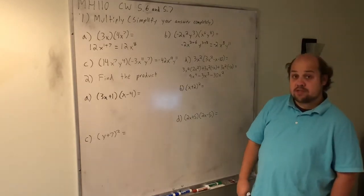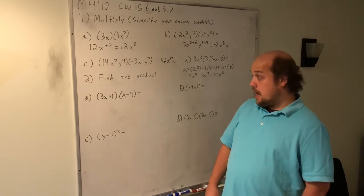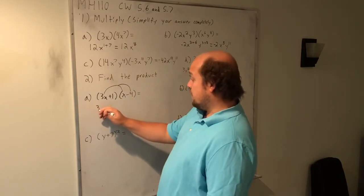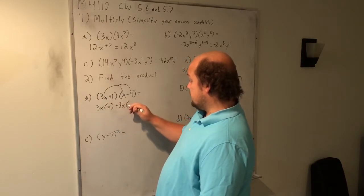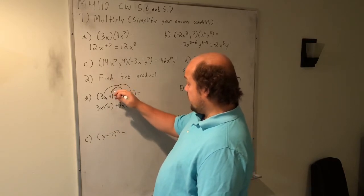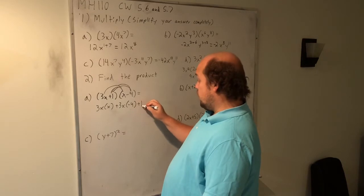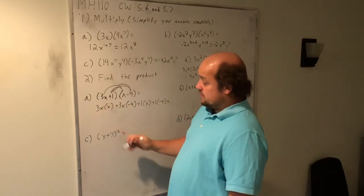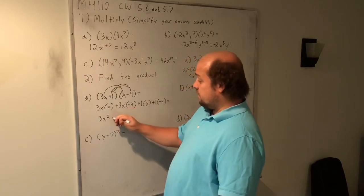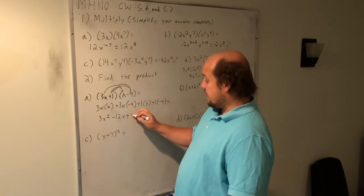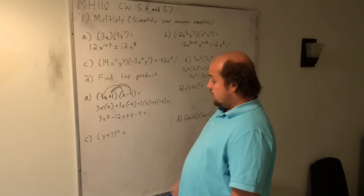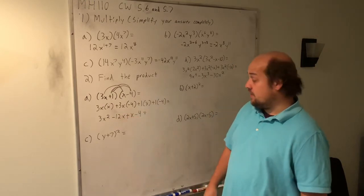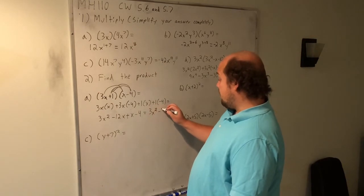When I do these multiplications of binomials, if you know the FOIL method and want to use it, I'm going to show it as double distribution. This 3x is multiplied by each term in the second parentheses, so it becomes 3x times x plus 3x times negative 4. Then this second term is multiplied by each term in the second parentheses, so it becomes plus 1 times x plus 1 times negative 4. 3x times x gives me 3x squared. 3x times negative 4 gives me negative 12x. 1 times x gives me x. And 1 times negative 4 gives me negative 4. Combining the like terms, negative 12x and positive x combine to give me negative 11x. So I wind up with 3x squared minus 11x minus 4.